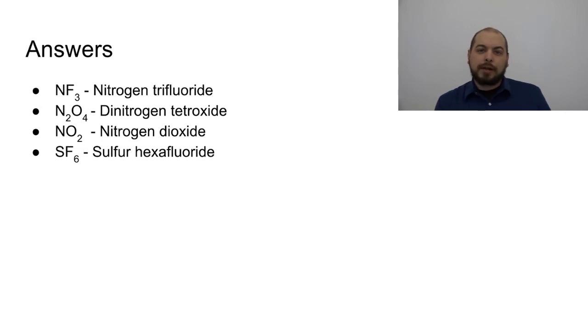Alright, so I've had a few seconds to work on this. Let's go through the answers. The first molecular compound that we're looking at is NF3. Now, NF3, the first element is nitrogen. But there's only one of it, so we actually don't need that first prefix. So we're just going to say nitrogen. There are three fluorines, which means we need to start the fluorine with tri, and we're going to drop the ending and end it in ide. So this becomes nitrogen trifluoride.